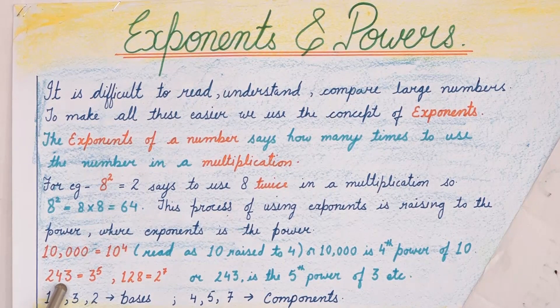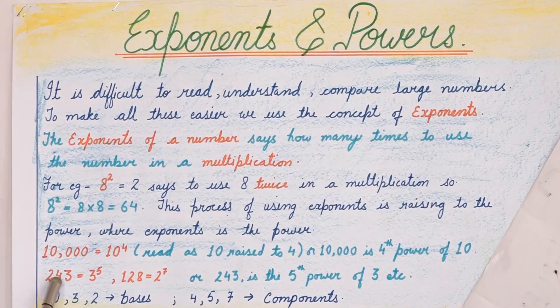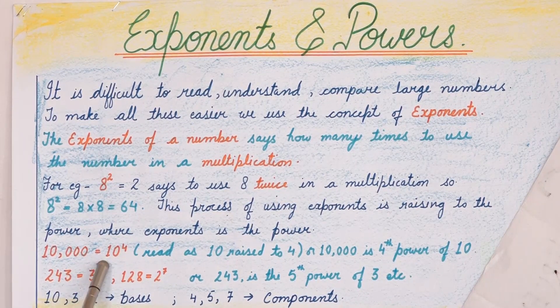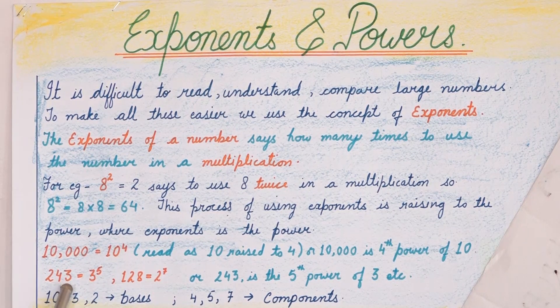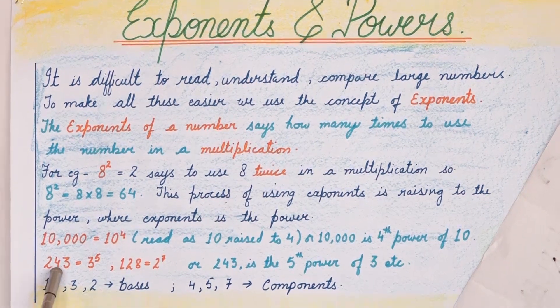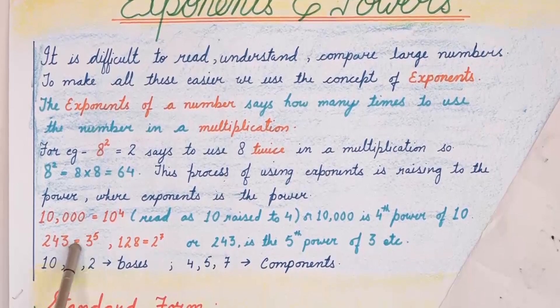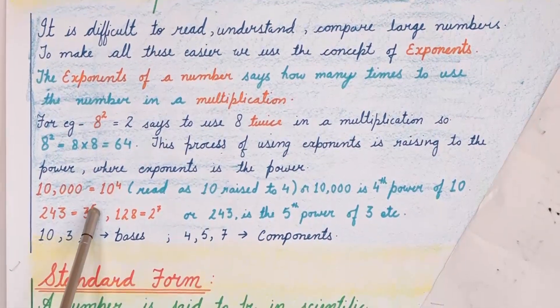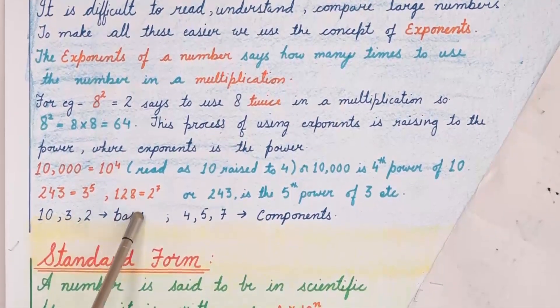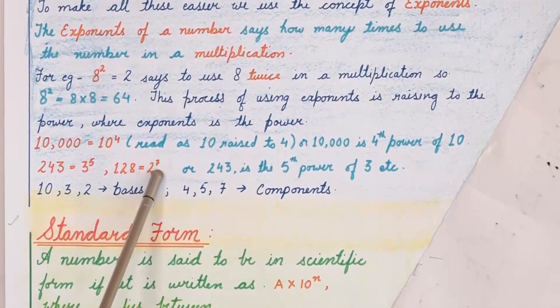Now the next number is 243. In exponential form we can write 243 as 3 raised to the power 5. First of all we have to take LCM of this number. After taking LCM we can rewrite this as 3 raised to the power 5. 128 means 2 raised to the power 7.